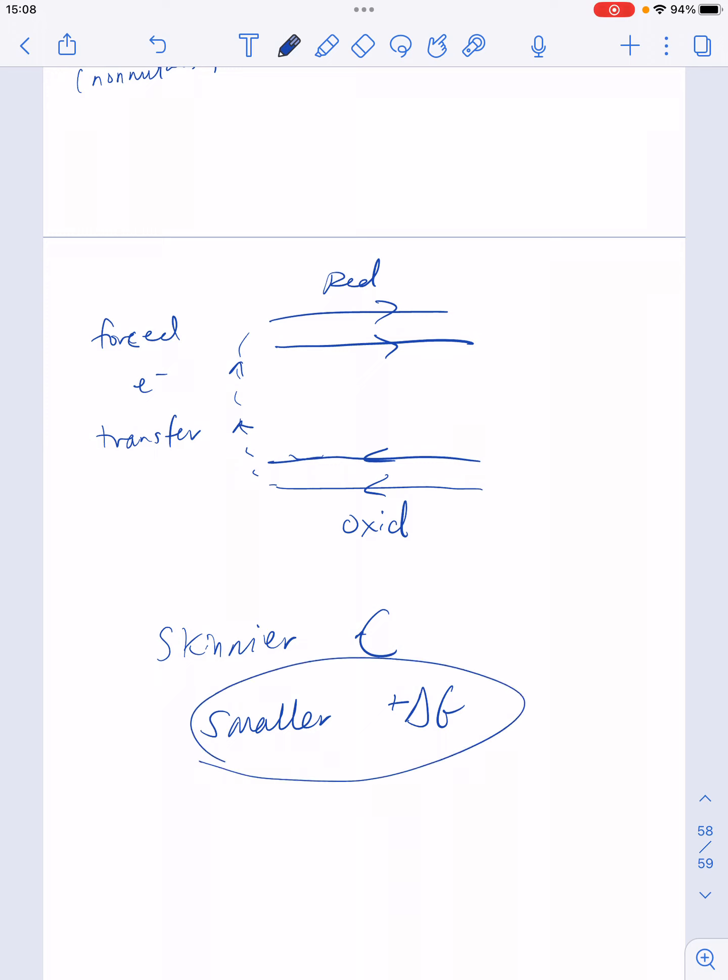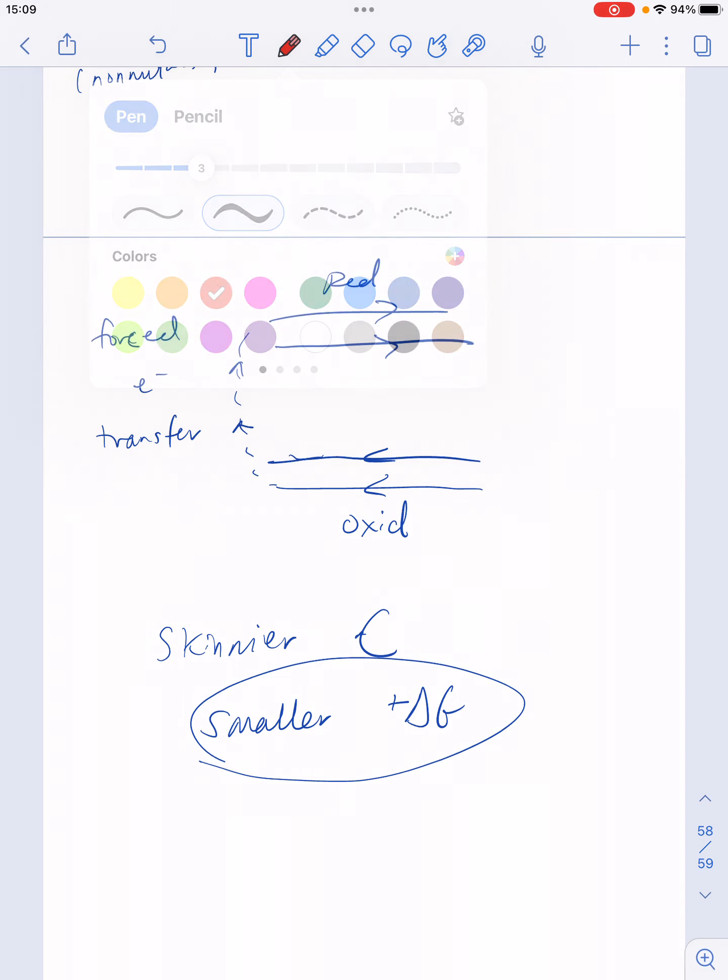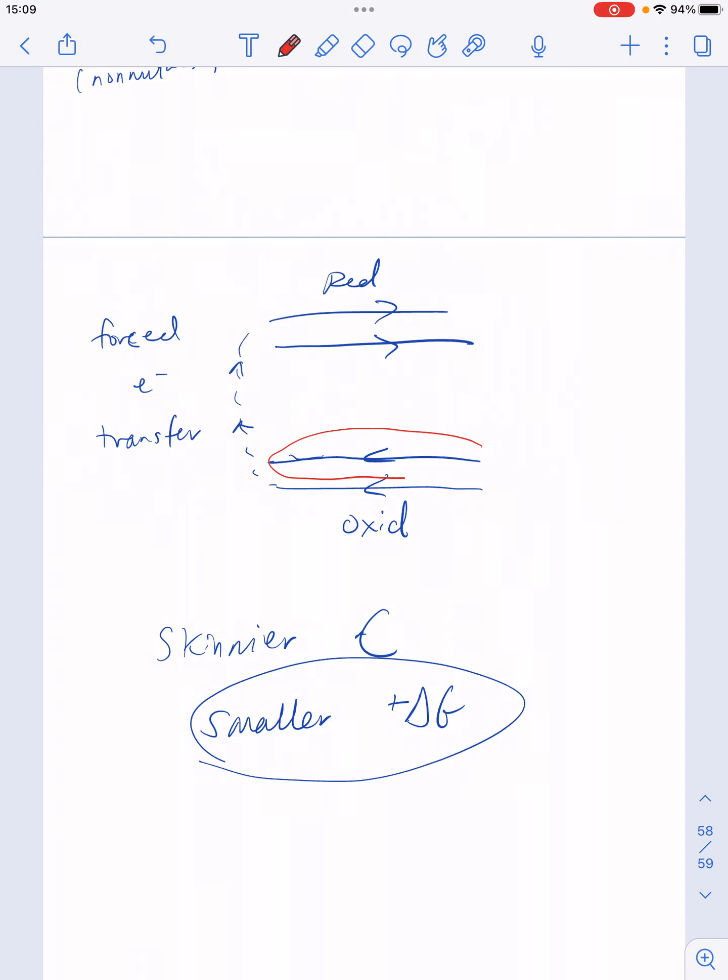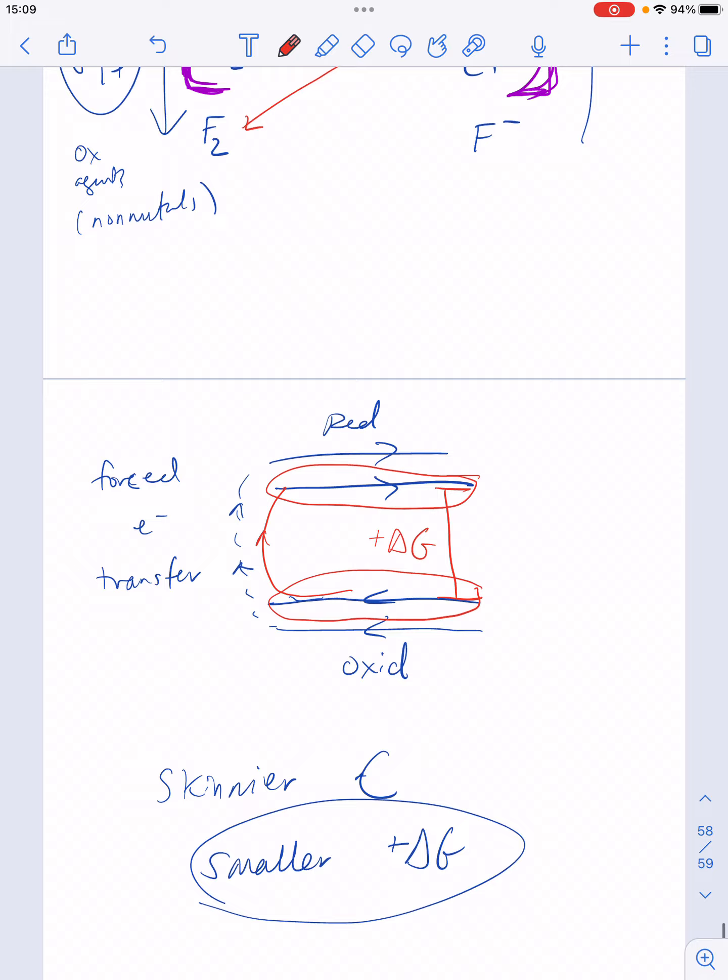So the smaller the positive delta G, the better. And so of these choices that I've drawn here, I would pick the higher up oxidation, and I would pick the lower down reduction. That's going to give me the smallest positive delta G between these two, rather than the ones on the outside.